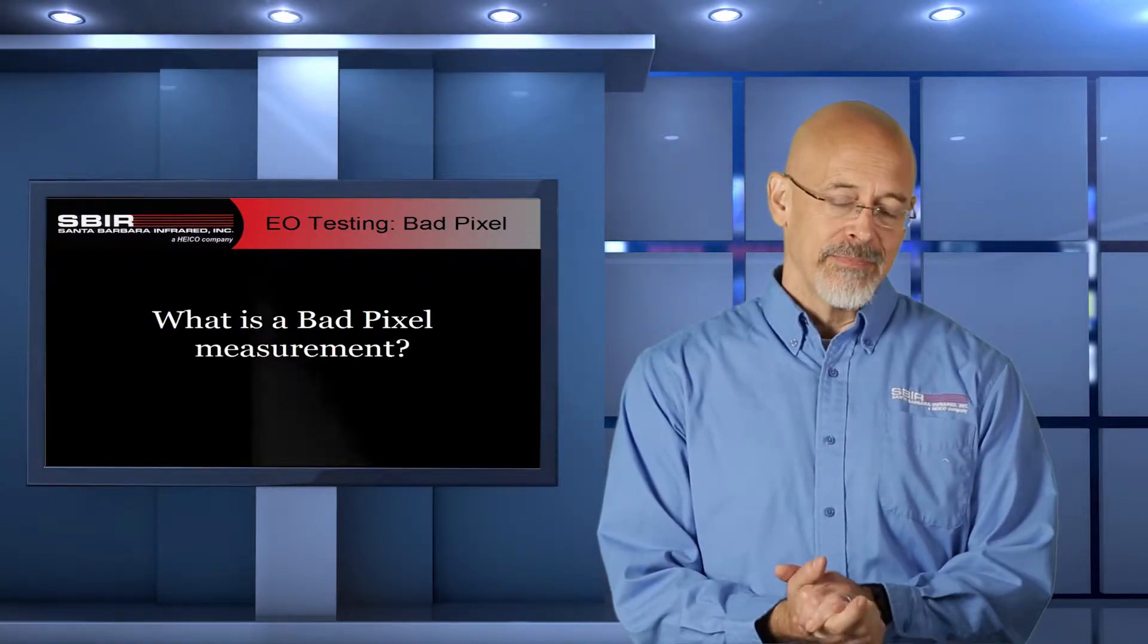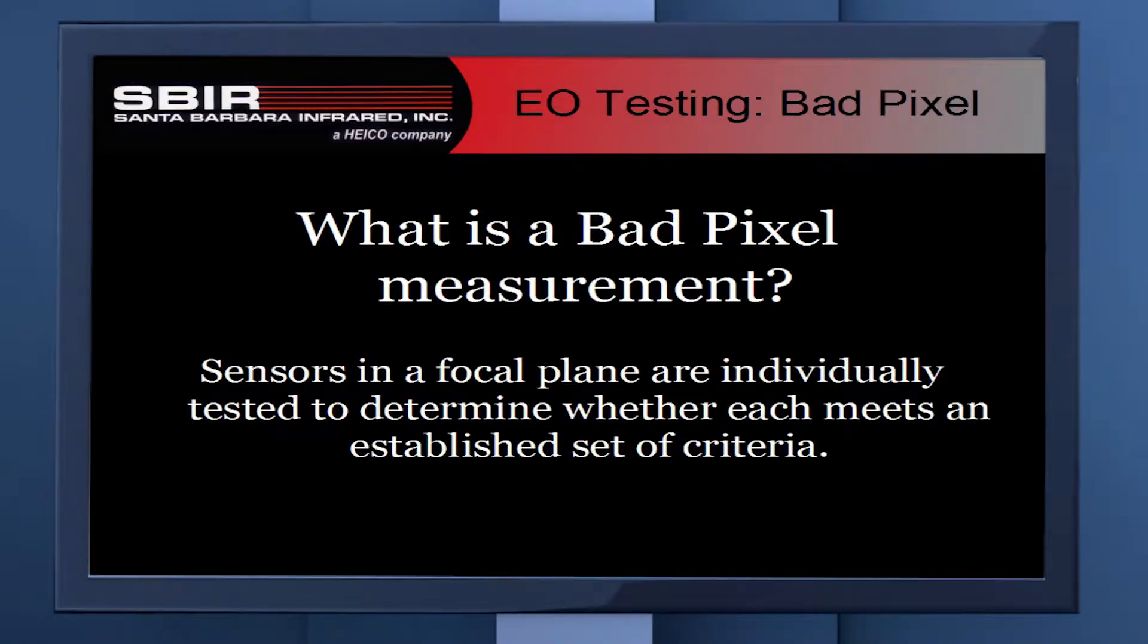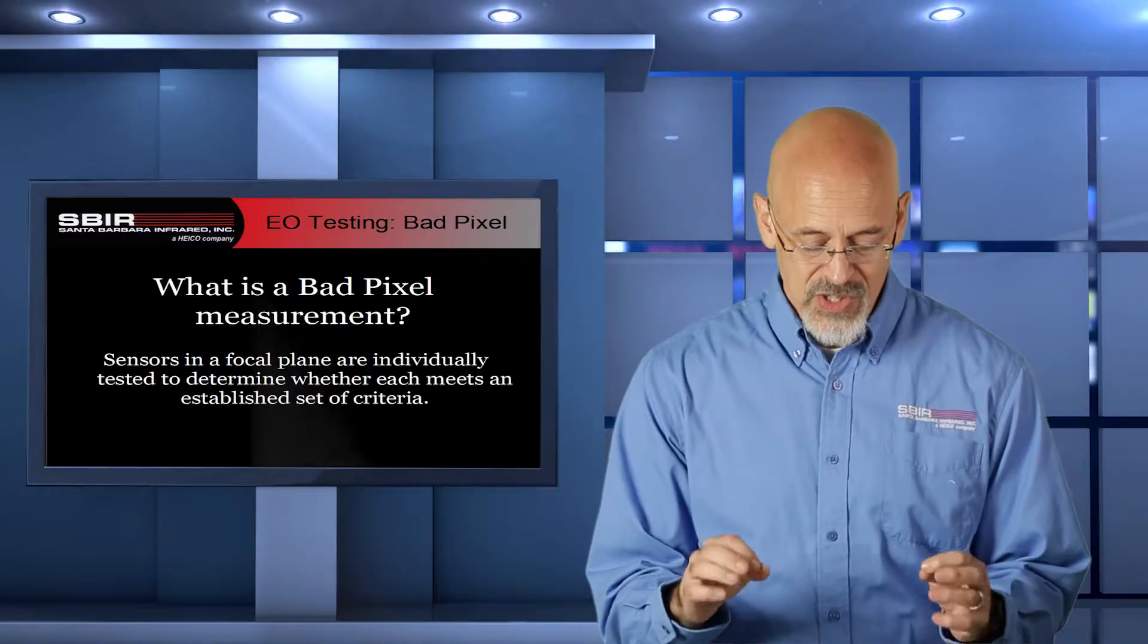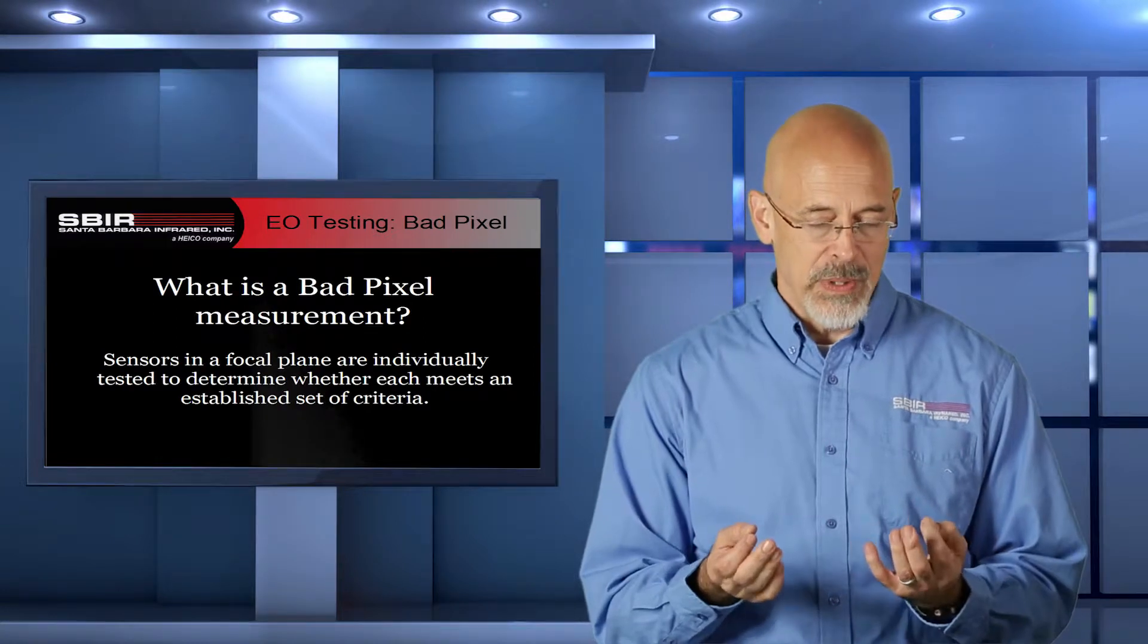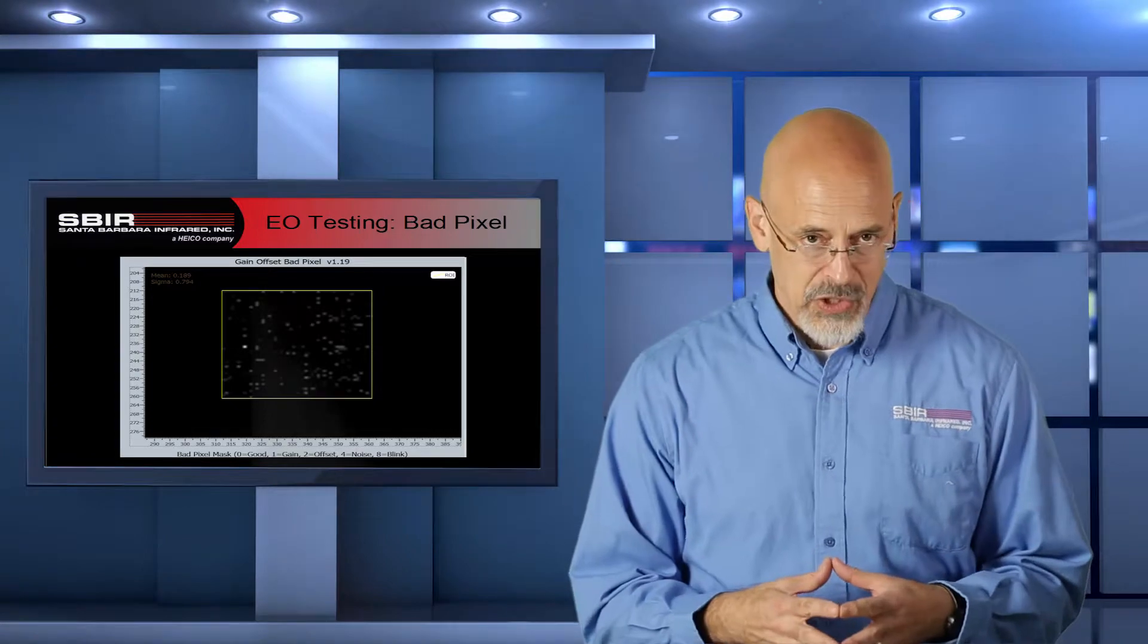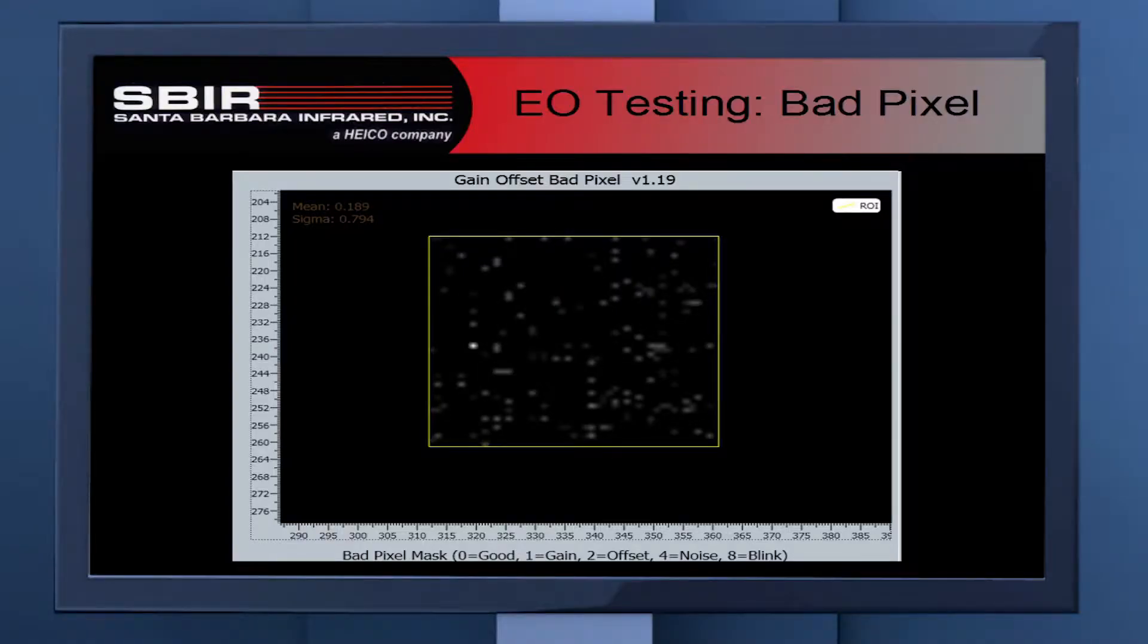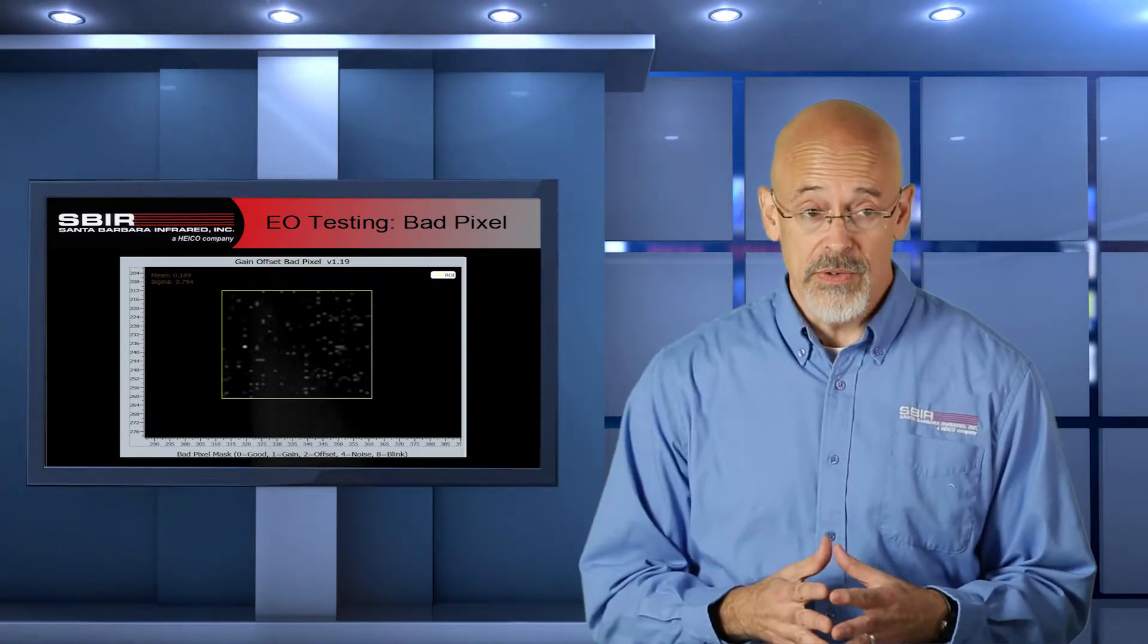So, what is a bad pixel measurement? What we're trying to determine is whether a focal plane, the sensor itself, is acceptable, whether it passes our set of criteria. We've established a set of criteria for every pixel in that focal plane, and we're going to analyze those pixels to determine whether they fit within our criteria. This would be a standard pixel map, a bad pixel map, where we've identified all the bad pixels. This would be a map of those bad pixels in the overall field of view of the camera, or at least in the range of interest.